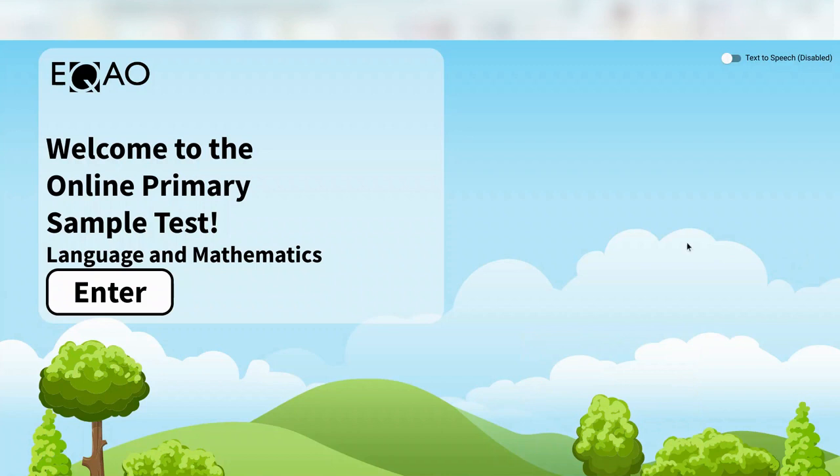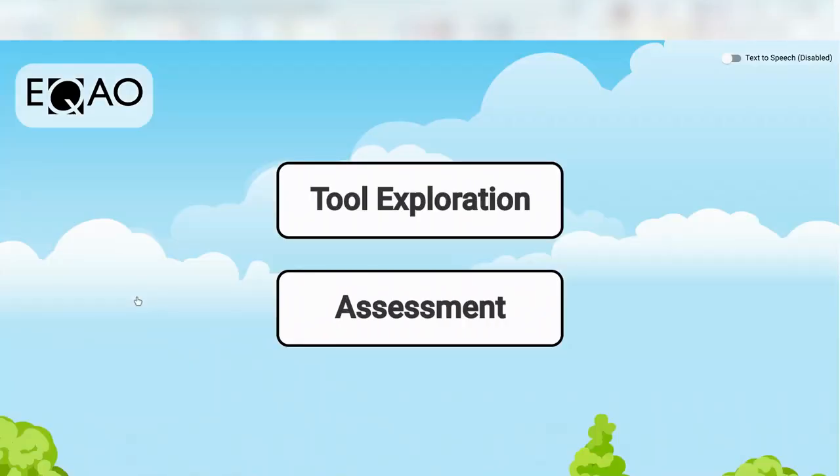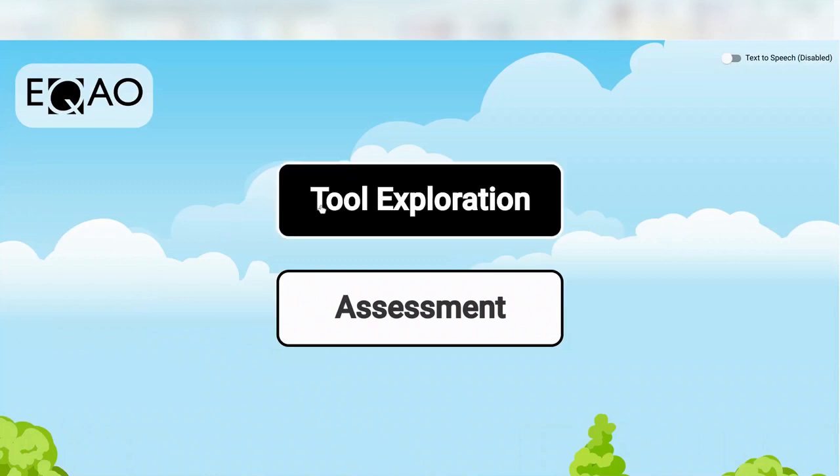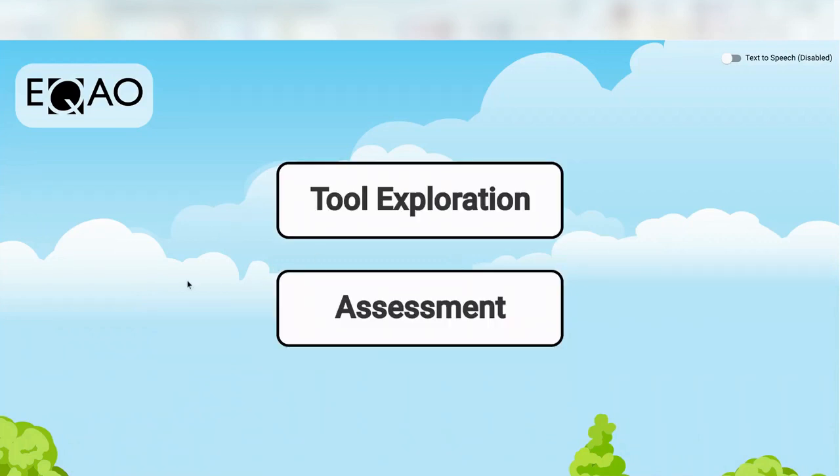Right now I'm on the grade three version of the test so I'm going to click enter. When I do so you'll see I have two options. One is called tool exploration and the other is called assessment.